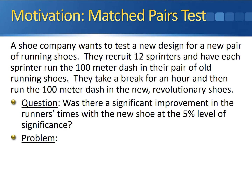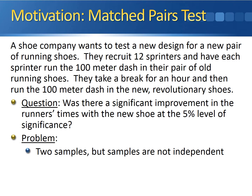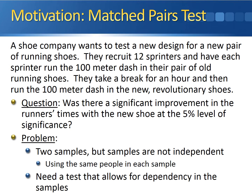Here's the problem with this scenario. We have two samples, but they're not independent from one another because we're using the same people in each sample. We need a test that allows for dependency in the samples. That test is the matched pairs test.